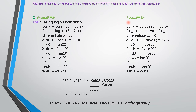and r² cos2θ = b². The solution for the first curve: taking log on both sides, it becomes log r² + log sin2θ = log a². On further solving, 2 log r + log sin2θ = 2 log a.